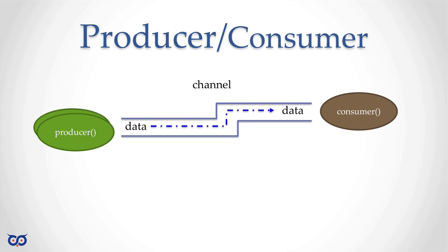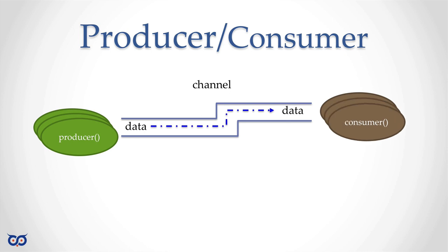That decoupling gives you the advantage of having multiple producers write into the same channel and multiple consumers consume from it — a huge advantage because it means you can easily scale your application. The channel takes care of moving data between producers and consumers; producers only care about writing to the channel, consumers only about reading from it. A lot of things are taken care of for you.